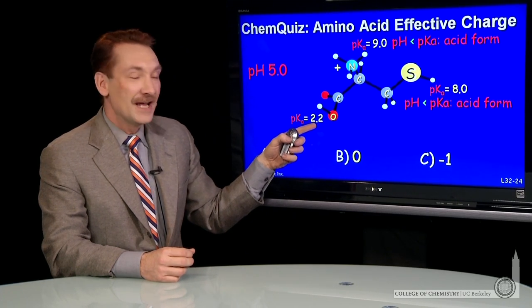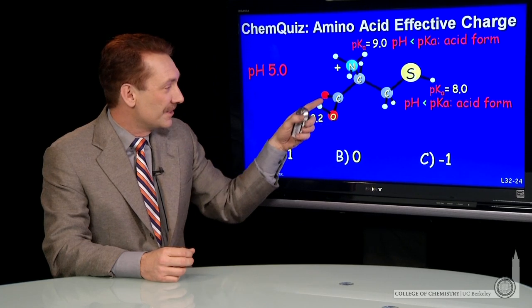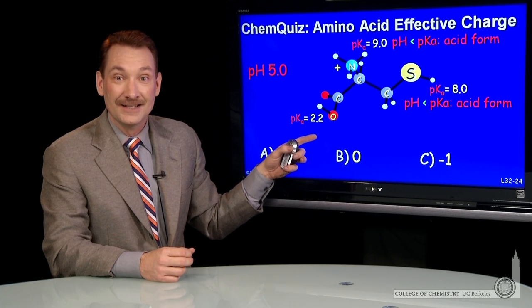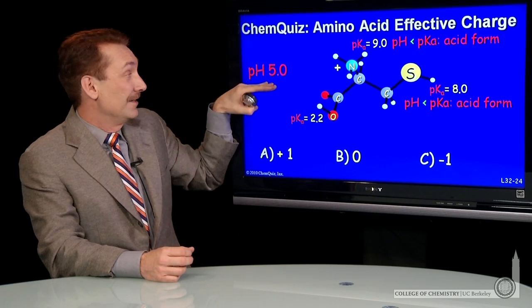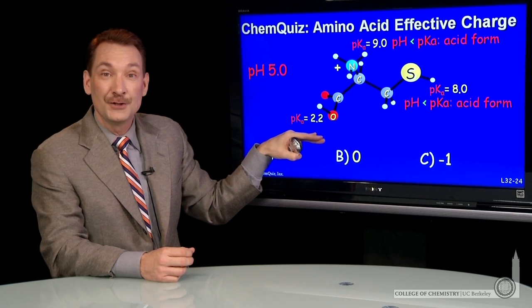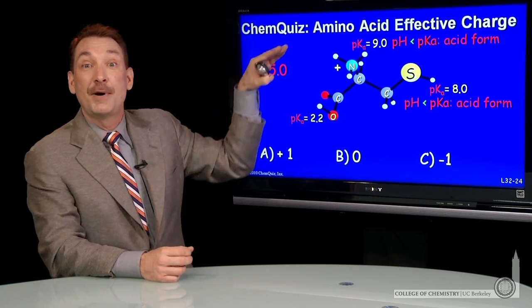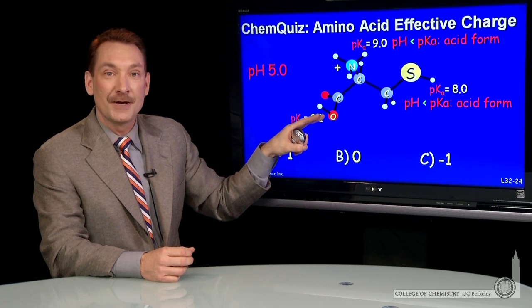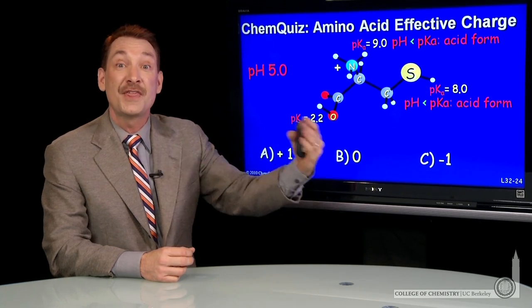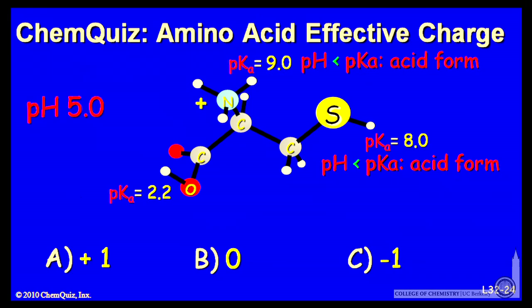Here, pKa 2, this is the carboxylic acid part of the molecule. The pKa is 2. Now I'm on the basic side. The pH is 5, the pKa is 2. So I'm at a pH above the pKa on the basic side. So the basic form predominates. The basic form is the form without the proton. So I lose this proton.